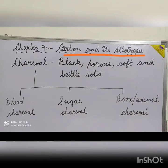The word amorphous means lacking in shape or form. In amorphous forms, carbon atoms are not arranged in an ordered pattern — that is, they do not have any particular shape. Coal, charcoal, coke, lamp black and gas carbon are the amorphous forms of carbon.